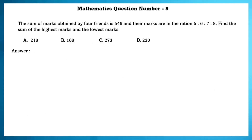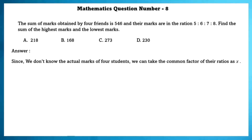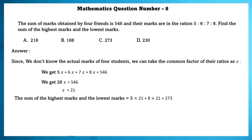Mathematics question number 8. The sum of marks obtained by 4 students is 546 and their marks are in the ratio 5 is to 6 is to 7 is to 8. Find the sum of the highest and lowest marks. Taking common factor as x, we get 5x plus 6x plus 7x plus 8x equals 546, so 26x equals 546, giving x equals 21. The sum of the highest and lowest marks is 273.